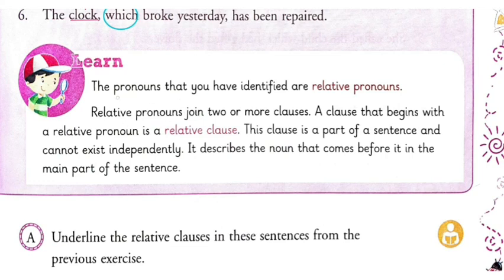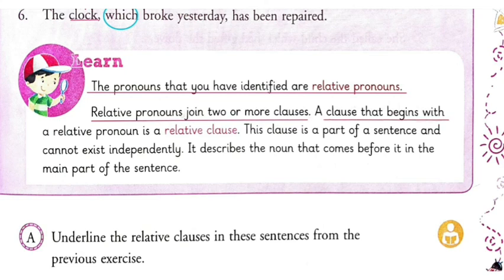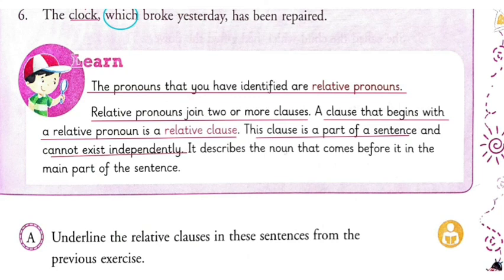The pronouns we identified are all relative pronouns. Relative pronouns join two or more clauses. A clause that begins with a relative pronoun is a relative clause. This clause is a part of the sentence and cannot exist independently — it is a dependent clause. It describes the noun that comes before it in the main part of the sentence.